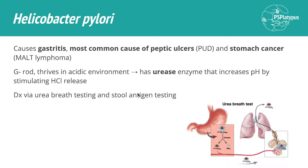H. pylori causes gastritis — infection of the stomach — and it's actually the most common cause of peptic ulcer disease. It also increases your risk of MALT lymphoma, and it can cause stomach cancer, though I'm not certain how common it is as a cause.